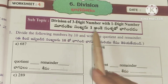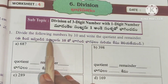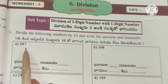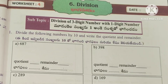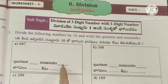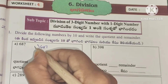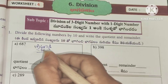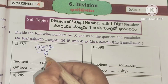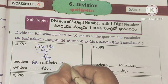Worksheet 4: Division of a 3-digit number by a 1-digit number. Divide the following numbers by 10 and write the quotient and remainder. Here 687 divided by 10. Quotient and remainder: doing subtraction. So quotient is 68, remainder is 7.